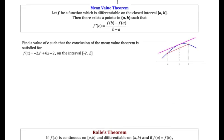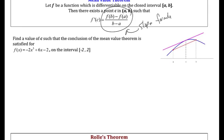The mean value theorem states: if f is differentiable on the closed interval [a, b], there exists a point c in the open interval (a, b) such that f'(c) equals f(b) minus f(a) over b minus a. This is just the slope formula — it's saying look at the slope of the whole interval from a to b. If the function is differentiable somewhere, at least once the instantaneous slope must equal that average slope, and we call that point c.